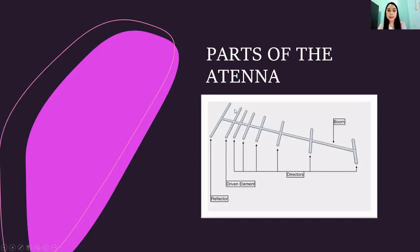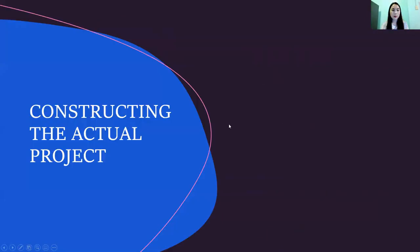And lastly, this is the reflector. So, it is the longest piece of the antenna and is located behind the driven element from the directors. So, the reflector is considered the rear of the antenna, and it gives the antenna its directionality by blocking waves coming from this side from the driven element. So, the next part is constructing the actual project, which will be discussed by my other group teams.